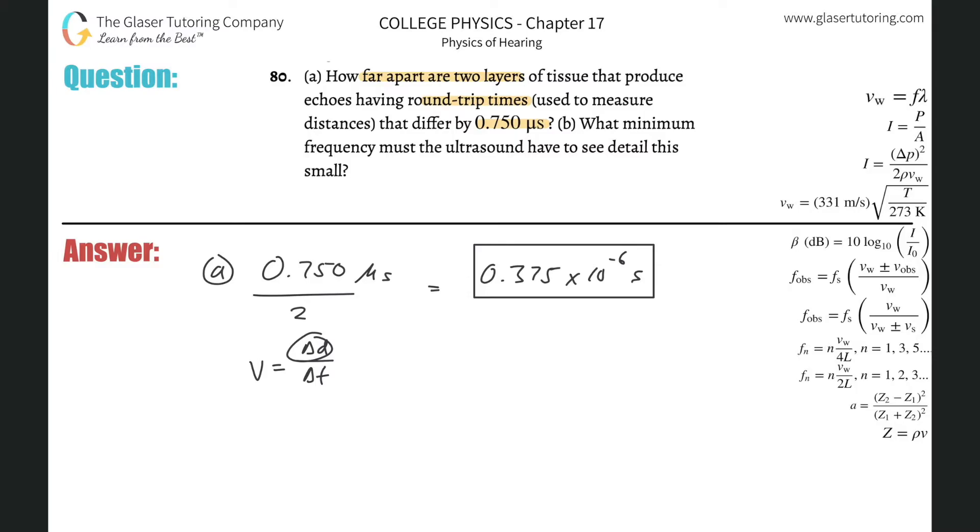If I know the average velocity through the tissue—it doesn't tell me what tissue, so I'm just going to use about 1540 meters per second. You could use fat, you could use muscle, but remember your answer will be dependent upon that assumption. We can solve this for the change of distance, so this becomes 0.375 times 10 to the minus 6.